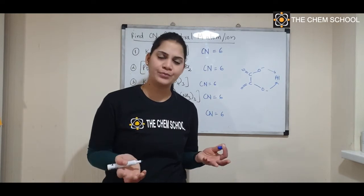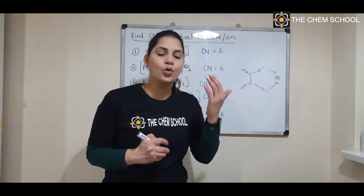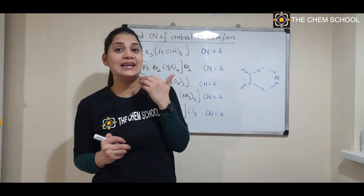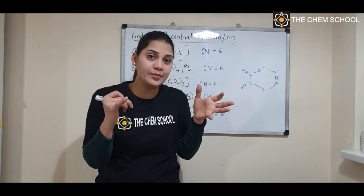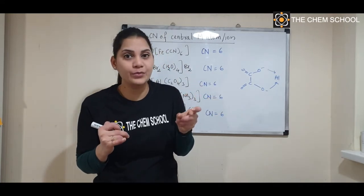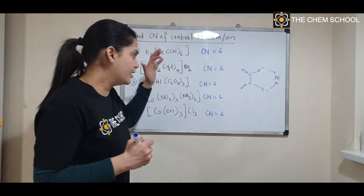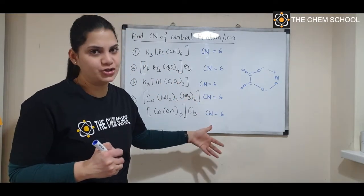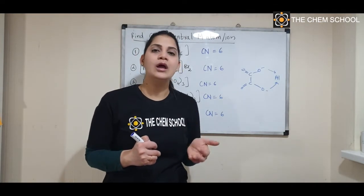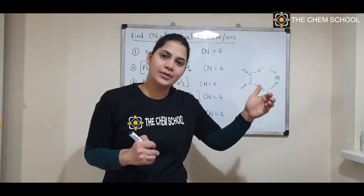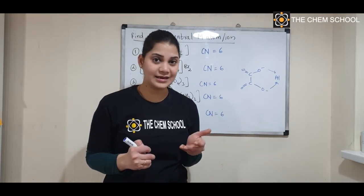Some complexes have monodentate ligands and some have bidentate ligands, but the coordination number can still be six. If you have EDTA, recall that it is a hexadentate ligand — one EDTA can form six coordinate bonds with one metal ion, giving a coordination number of six directly. Remember: the higher the coordination number, the more stable the complex.